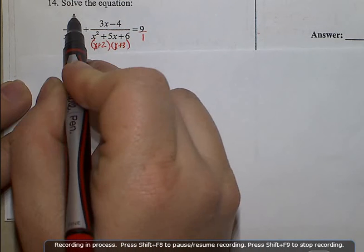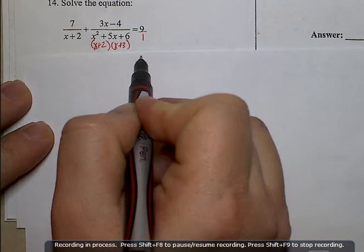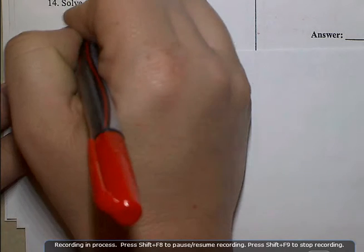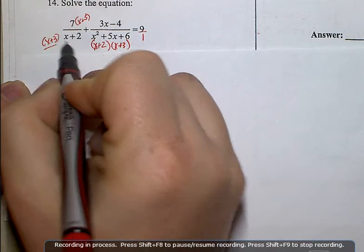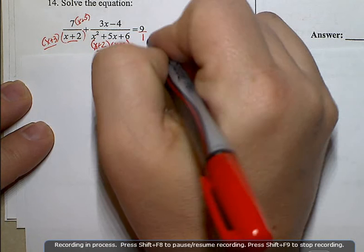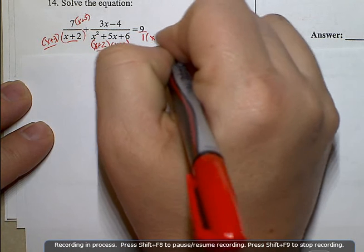So this fraction is missing an x plus 3. Both has an x plus 3 and an x minus 2. And this is missing an x plus 2 and an x plus 3.